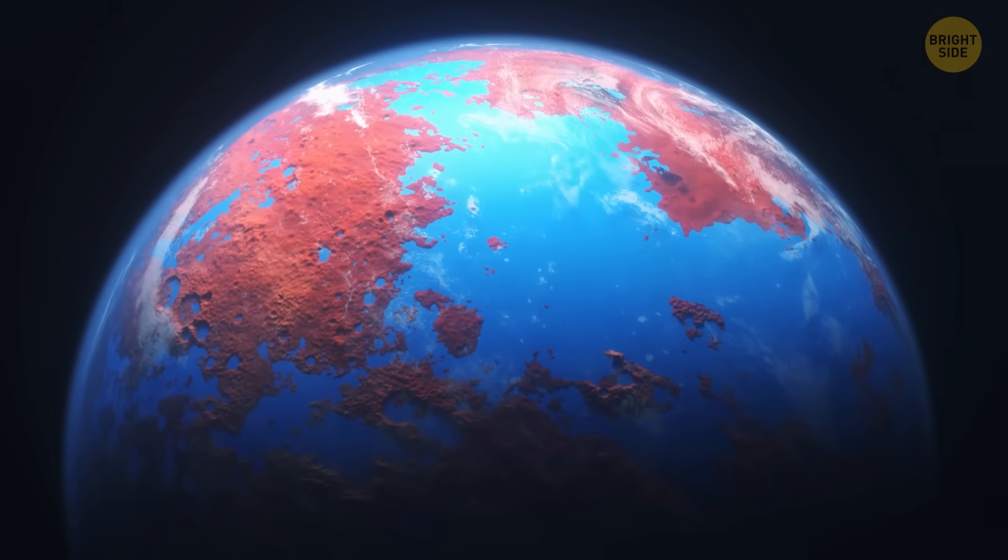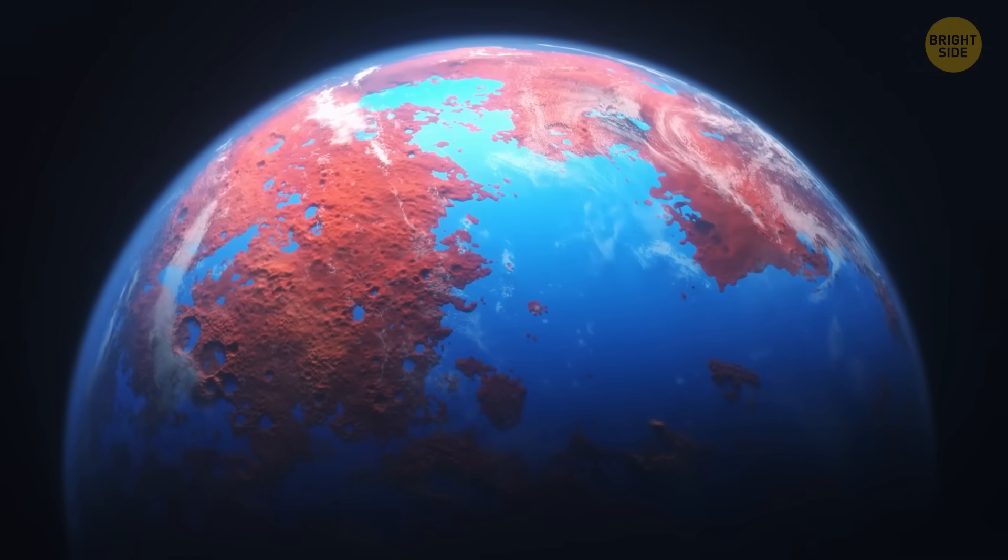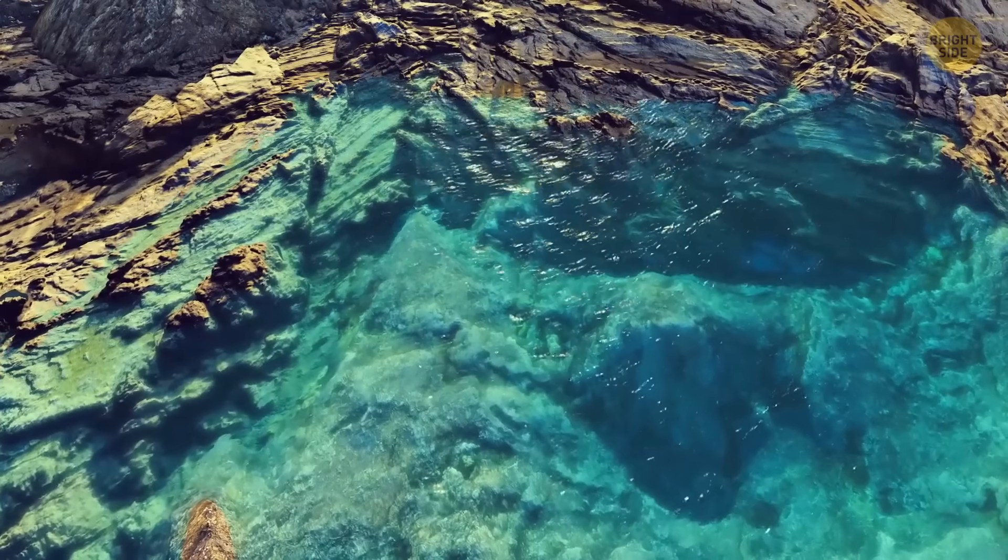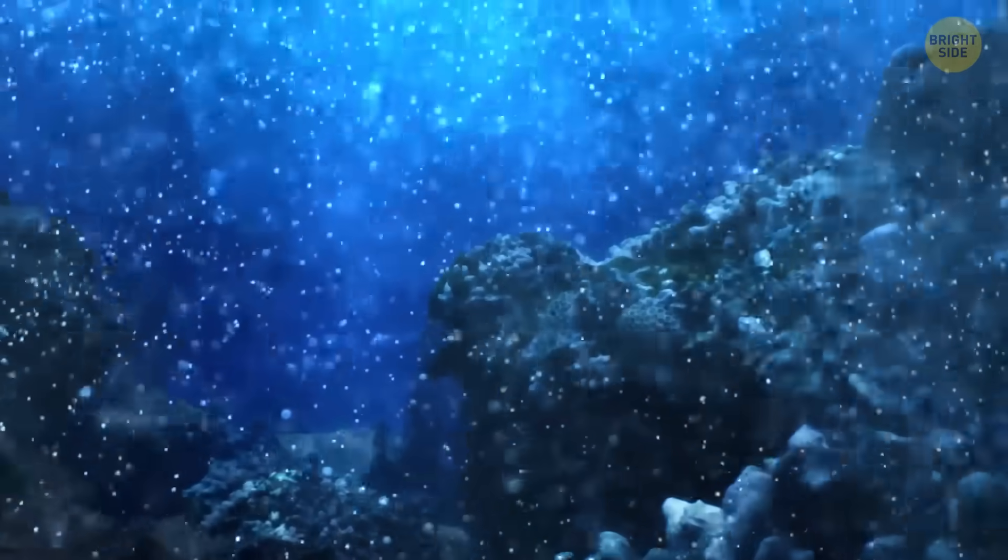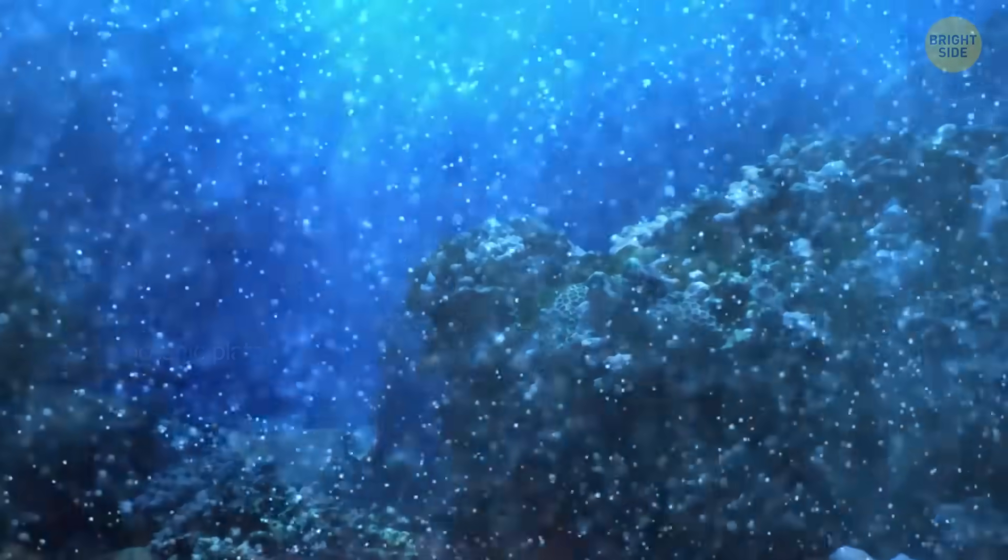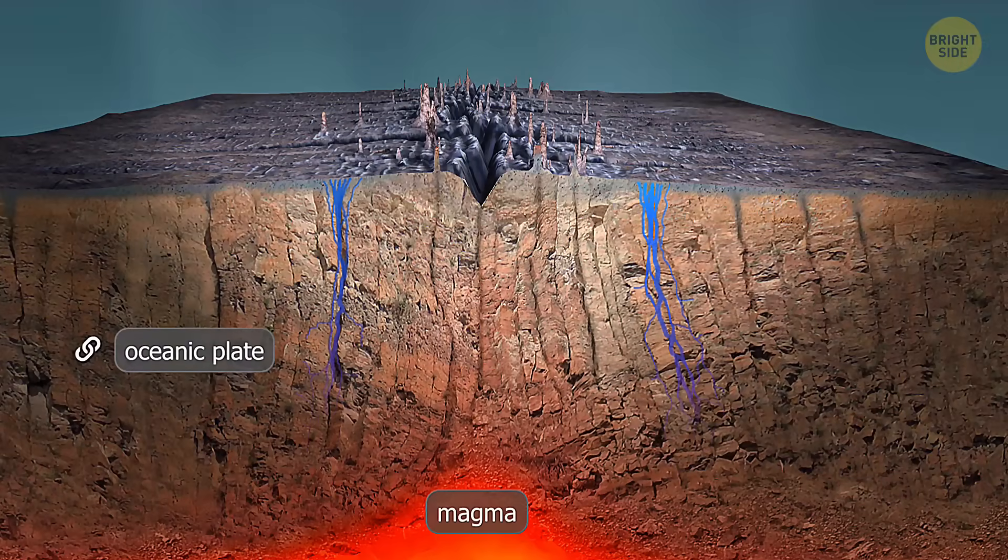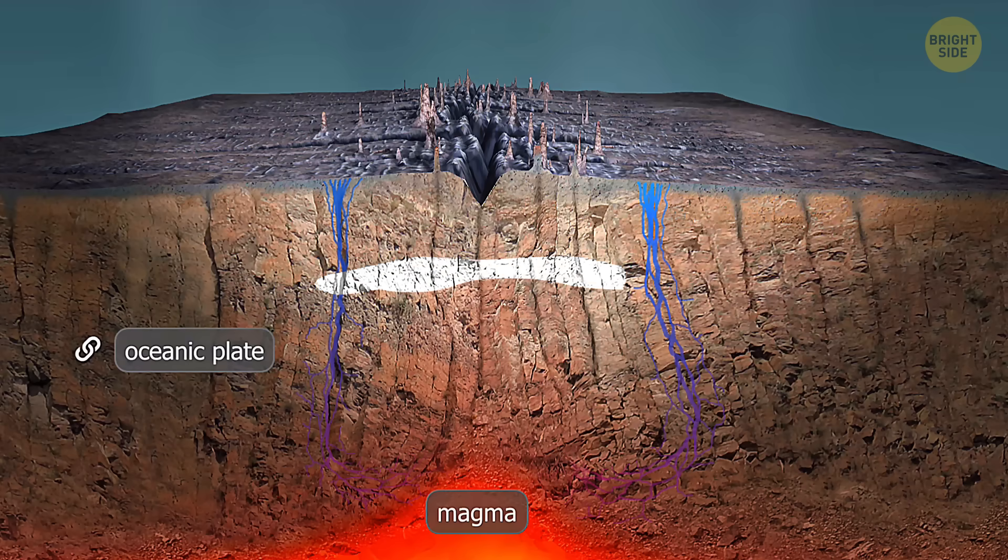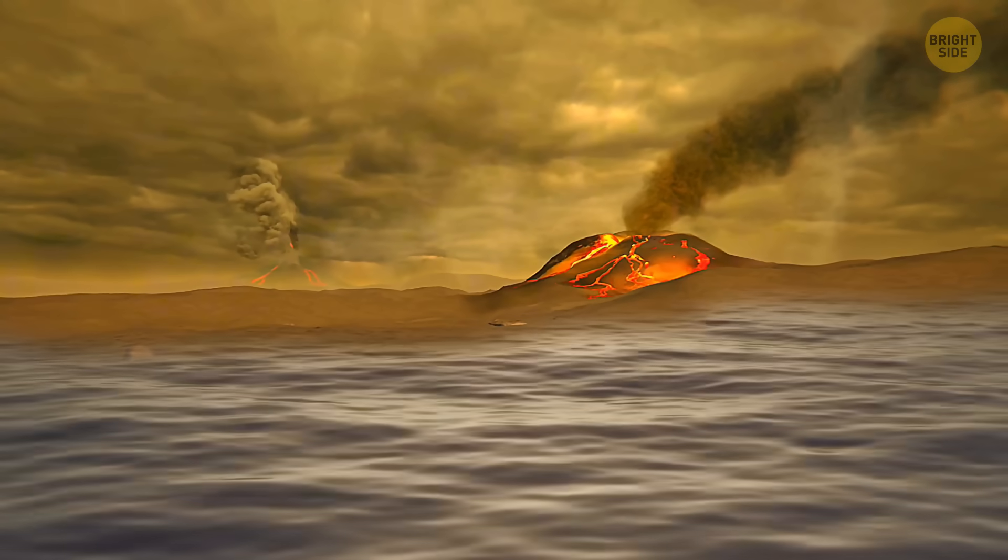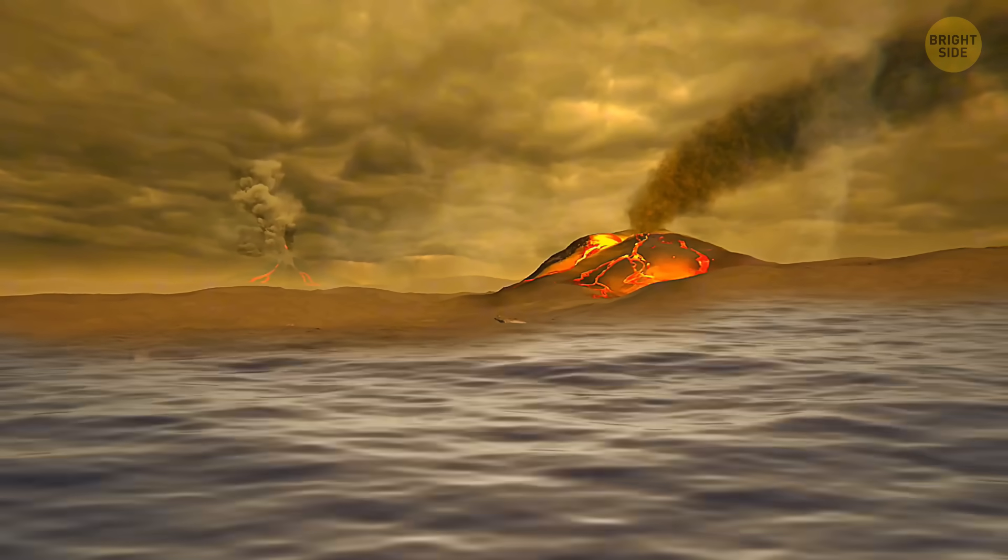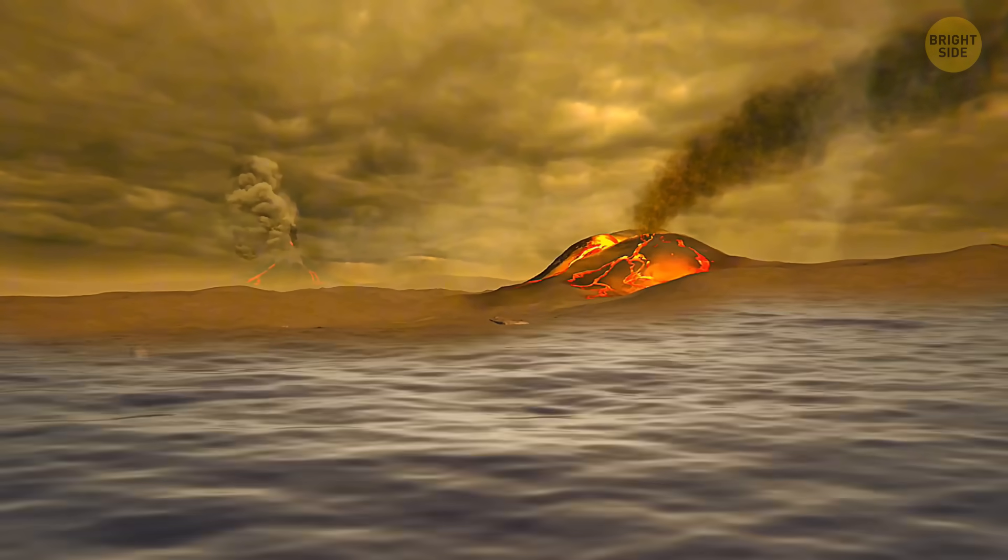It went like this. The supercontinent Nuna broke apart, and it created lots of brand new ocean floors in young seas that didn't exist before. These new ocean floors pulled carbon dioxide out of the air. Seawater flowed into cracks in the ocean floor. When that happened, carbon got trapped in rocks, forming limestone. Over time, this process locked carbon away inside Earth instead of letting it stay in the atmosphere.